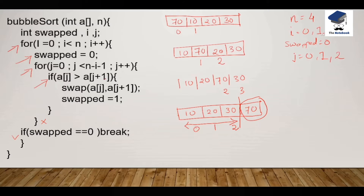Now we perform the if condition: if swap is equal to 0 — yes, swap is equal to 0, so we break the outer loop. This is the reason why we have used the swap variable. If we had not used swap, the for loop would continue running till the size of the array, which is meaningless. So the swap variable gives us an optimized solution.